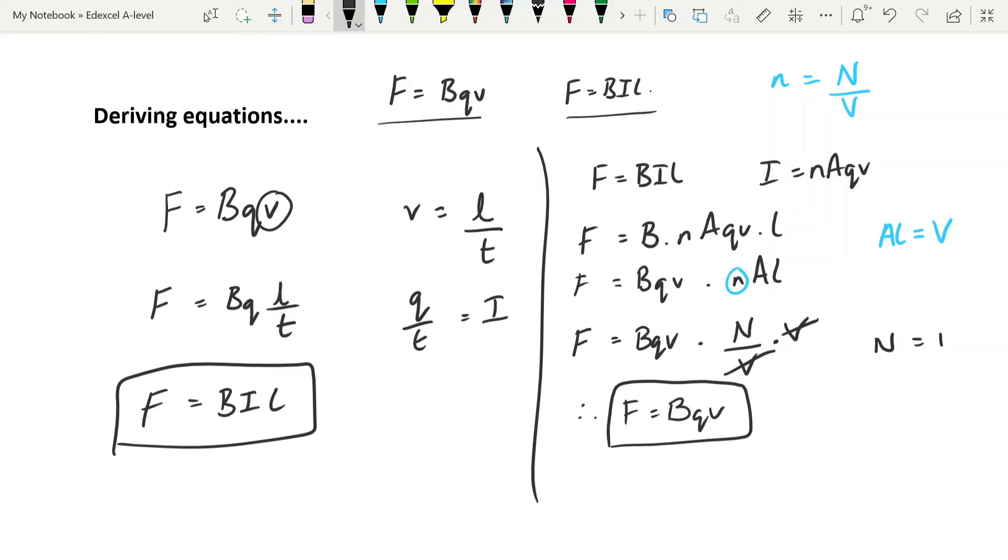There are other ways you can substitute here. And do play around with substituting for v, the average drift velocity, into bqv to get yourself to bil. Because one of the things that has been noticeable over the last few years with A-level papers is that they want you to demonstrate your comfort with substituting one equation into another. They'll give you something that you've never seen before as a result and they want you to get there.